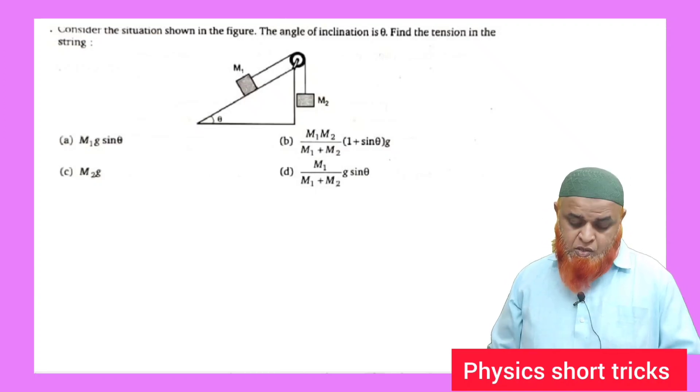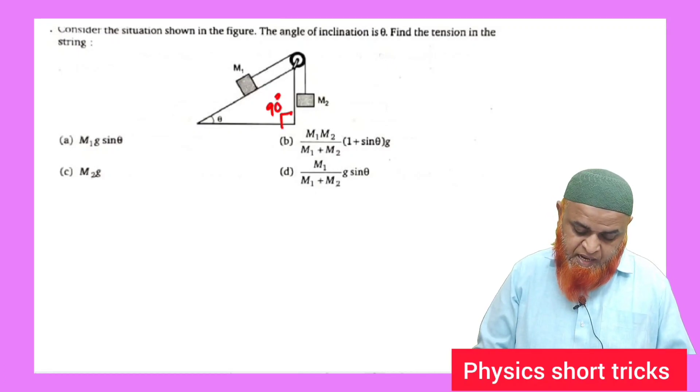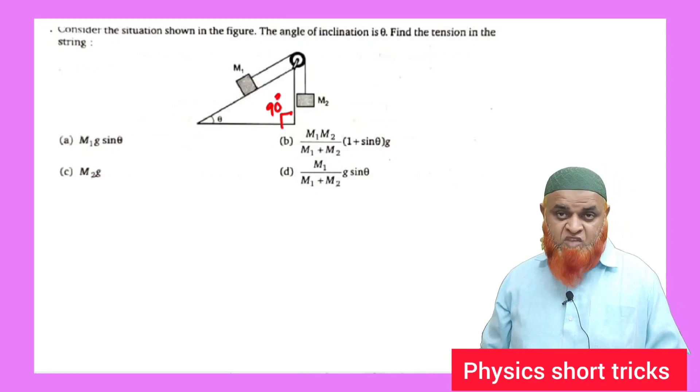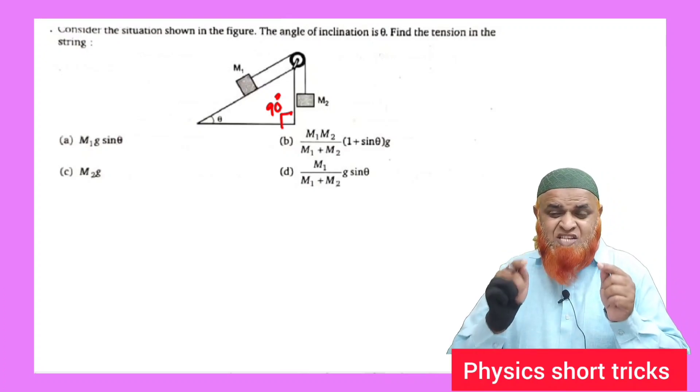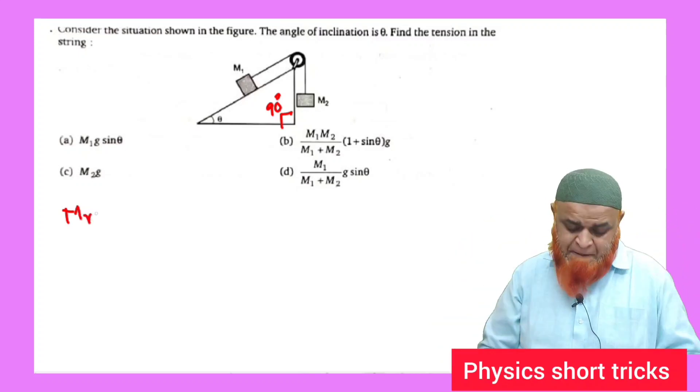You can see here this is the shortcut formula I'm going to discuss. If you see here, this is theta and this is going to be 90 degrees.